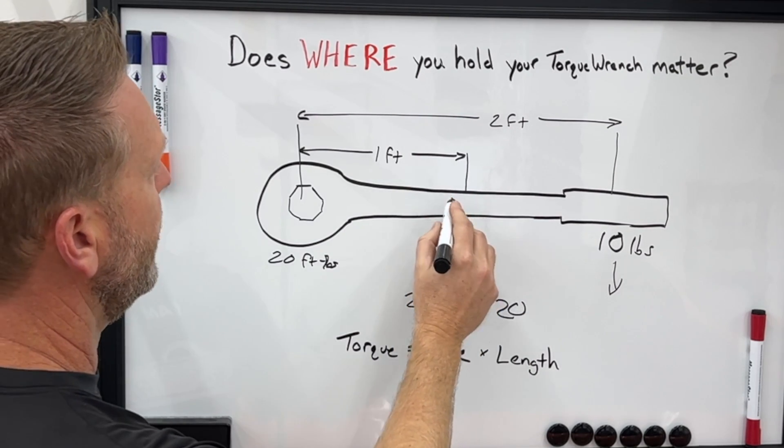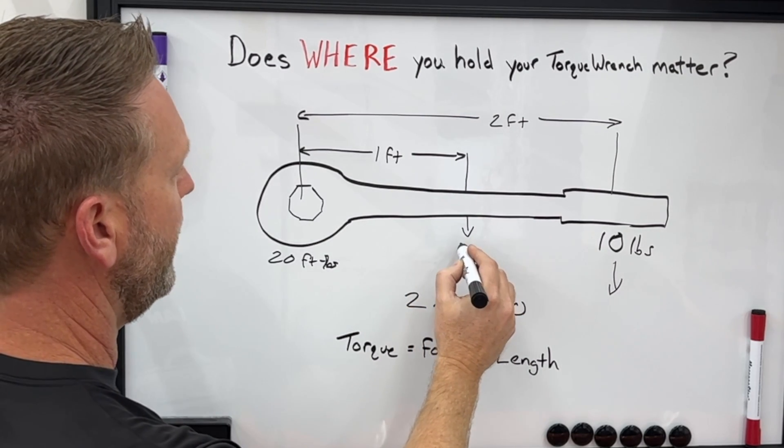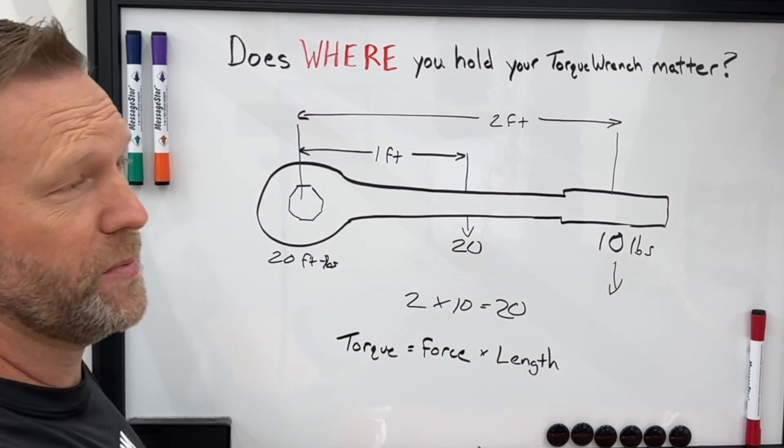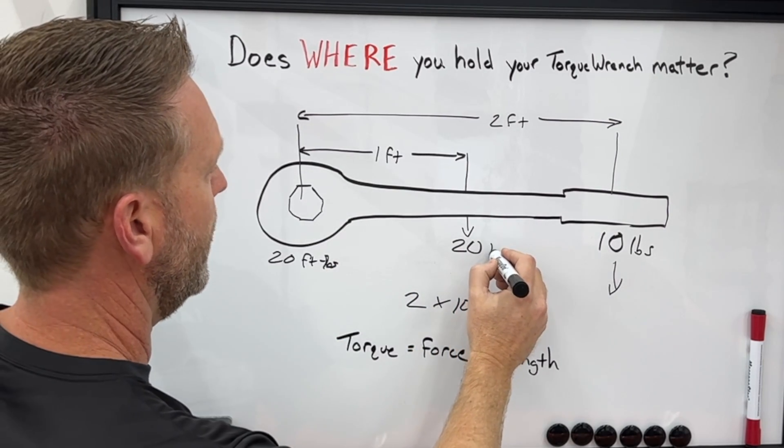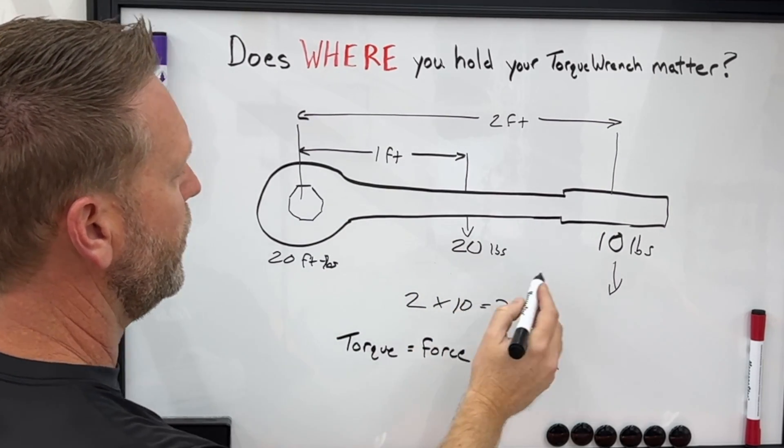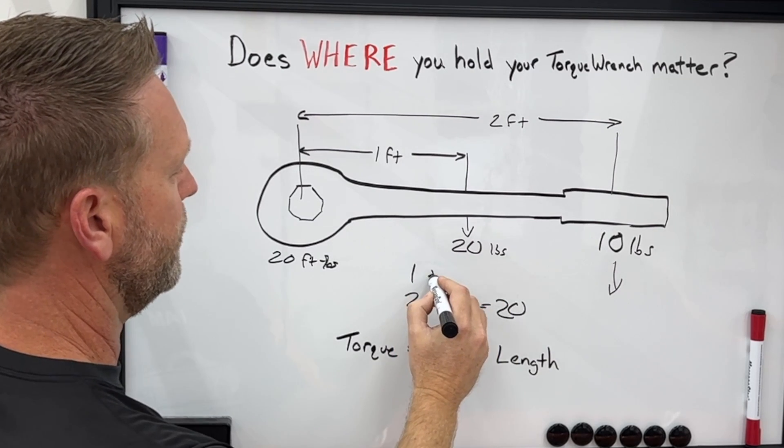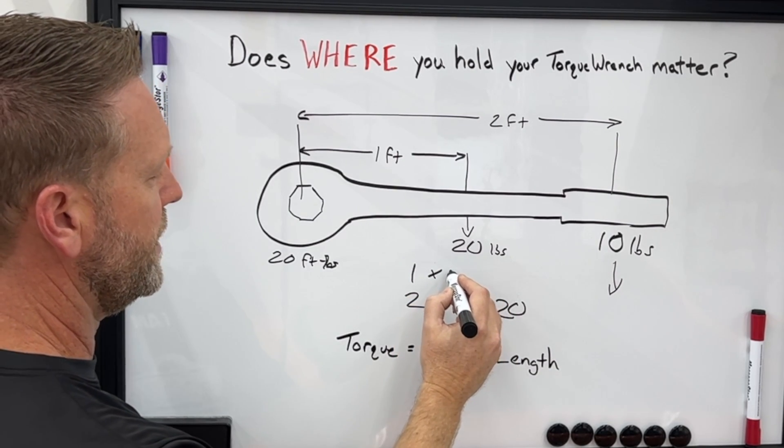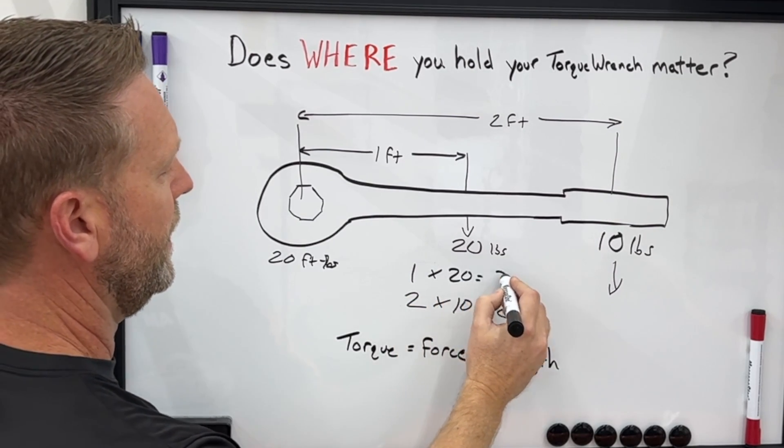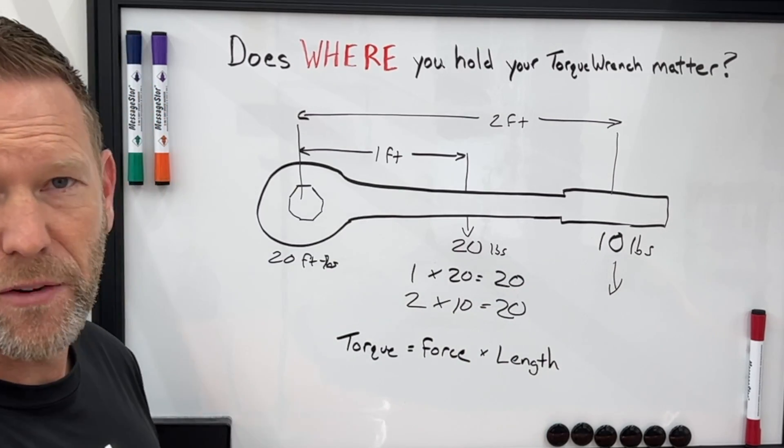If you were to grab the wrench here, you would have to apply more force. It would be harder, which makes sense to pull it from here. So if you applied 20 pounds of force, you have one foot times the 20 pounds and you are back at 20 foot pounds.